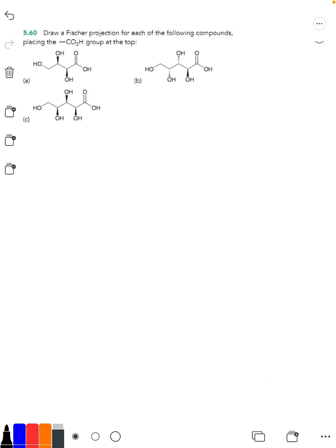Hi everybody, for this video we're going to be looking at problem 5.60 from the Klein organic chemistry third edition textbook talking about drawing Fischer projections starting with a standard bond line projection.